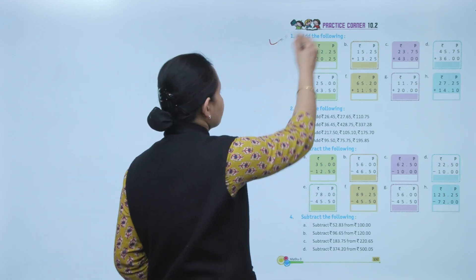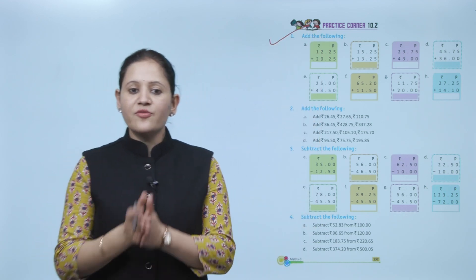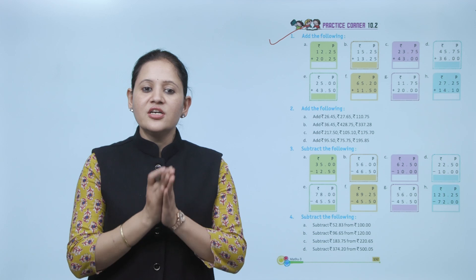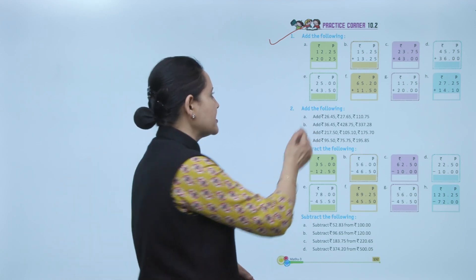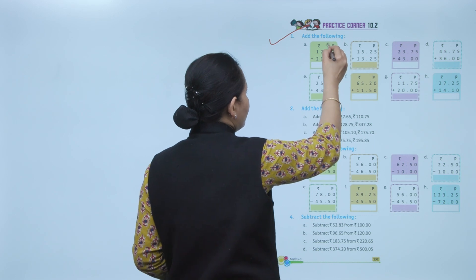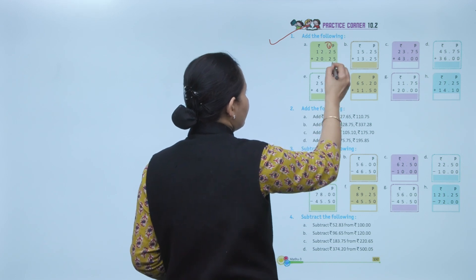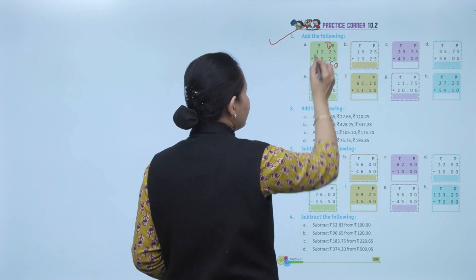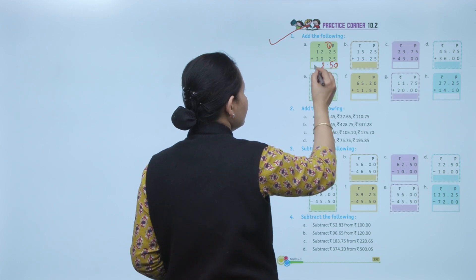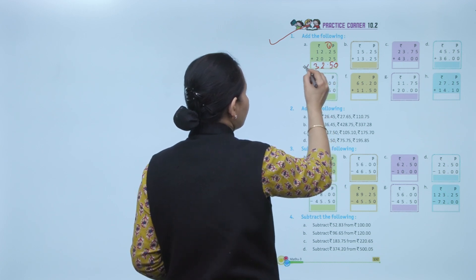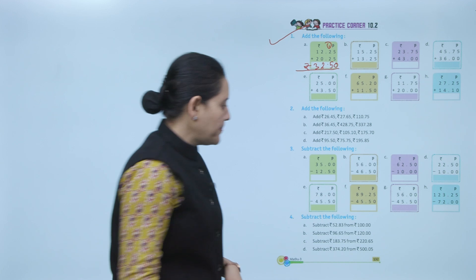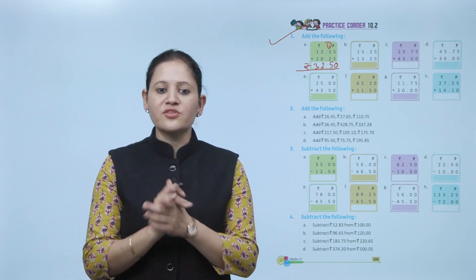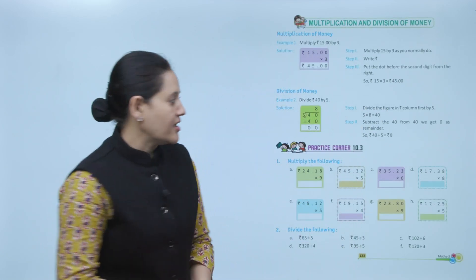Practice corner 10.2 — add the following. Add 12 rupees 25 paisa and 20 rupees 25 paisa. Starting from paisa: 5 plus 5 is 10, write 0 carry 1; 2 plus 2 is 4 plus 1 is 5; put decimal; 2 plus 0 is 2; 2 plus 1 is 3. So total is 32 rupees 50 paisa. Practice all the questions of this exercise.